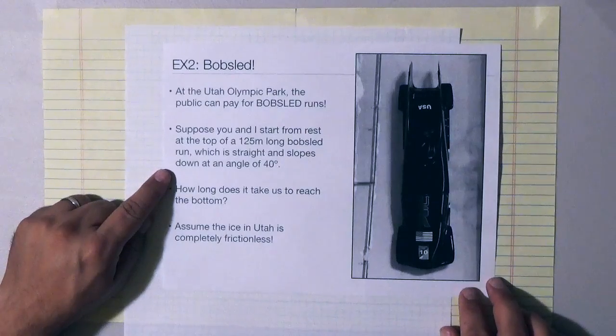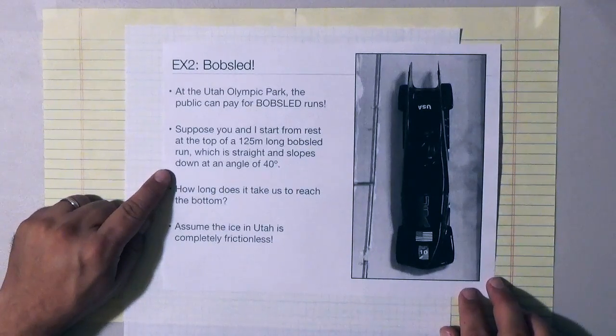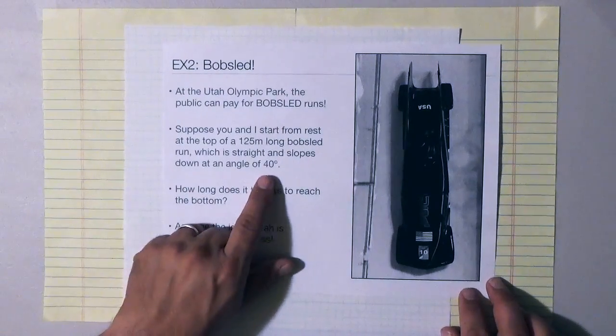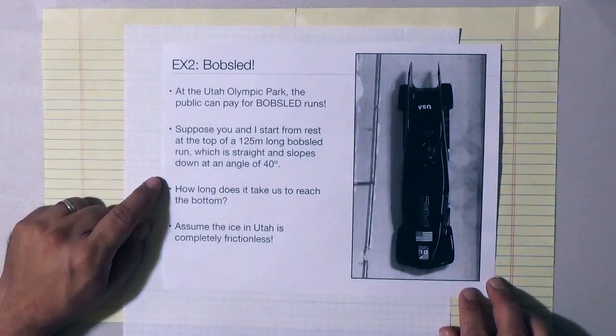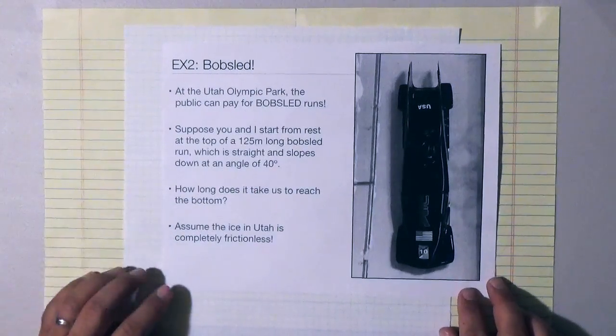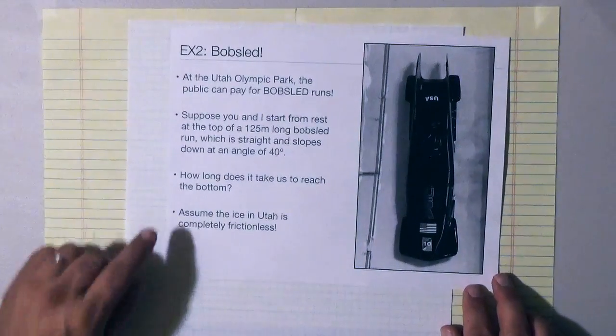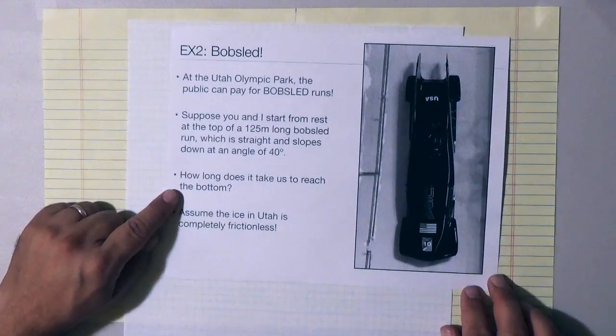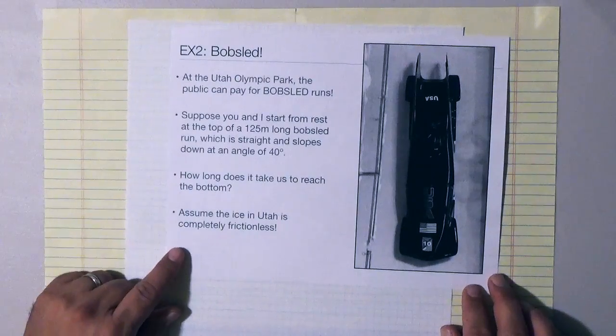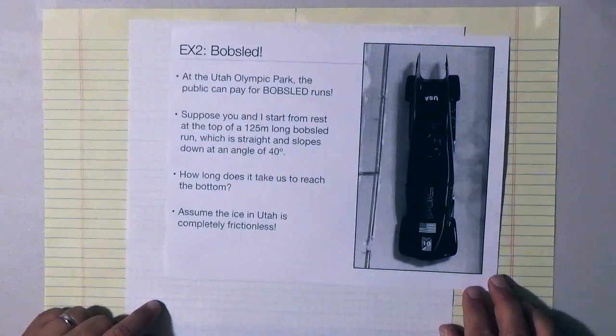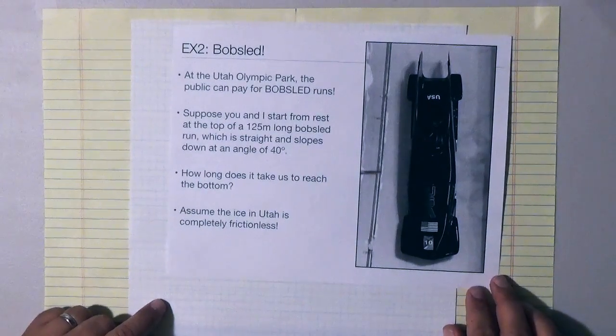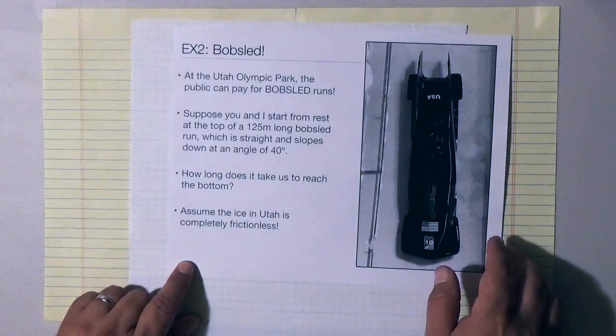Now this is a typical kind of statement you get when you are having hills described to you and so usually that angle 40 degrees means the angle measured upward from the horizontal. The questions we want to know is how long does it take the bobsled to reach the bottom of the run. We're going to assume that the ice is completely frictionless in this problem because we haven't learned to deal with friction yet.